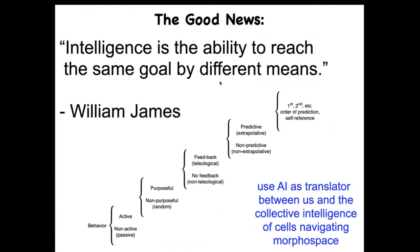When I say intelligence, I don't mean human-level second-order cognition. William James defined intelligence as the ability to reach the same goal by different means. Biology is really good at this. We now have the opportunity to use AI as a kind of translator between us and the robust intelligence of cells and tissues navigating what we call morphospace — the virtual space of all possible morphogenetic or anatomical outcomes. We have the ability to control how the living system navigates that morphospace.